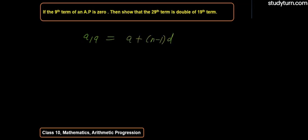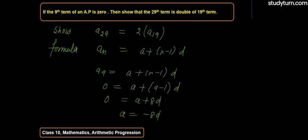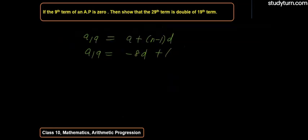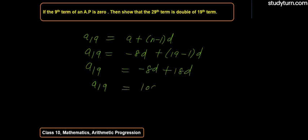Since a = -8d from the 9th term equation, we substitute: a_19 = -8d + 18d = 10d. Therefore, a_19 = 10d.